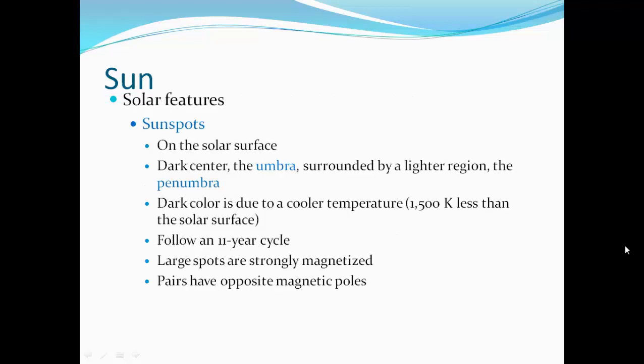Sunspots on the solar surface: a dark center is the umbra, surrounded by a lighter region called the penumbra. Dark colors are due to cooler temperature, about 1,500 degrees Kelvin less than the solar surface. They follow an 11-year cycle. Large spots are strongly magnetized. Pairs have opposite magnetic poles.